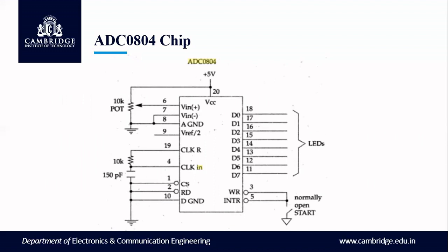It is a dual in-line package with a total of 20 pins. Pin 1 is CS — chip select; pin 2 is RD — read; pin 3 is WR — write; pin 4 is clock in; pin 5 is INTR; pin 6 is VIN plus; pin 7 is VIN minus — these are differential inputs; pin 8 is analog ground; pin 9 is V-reference by 2; pin 10 is digital ground; pins 11 to 18 are data lines for the 8-bit binary output; pin 19 is clock R; and pin 20 is VCC, the power supply.